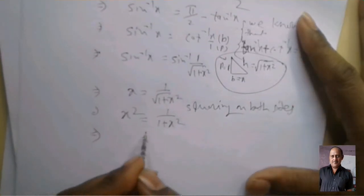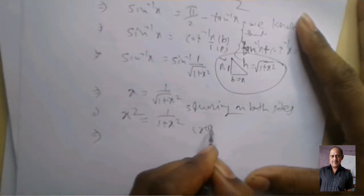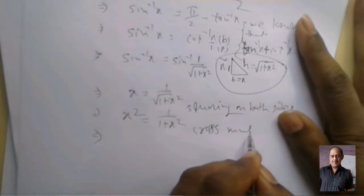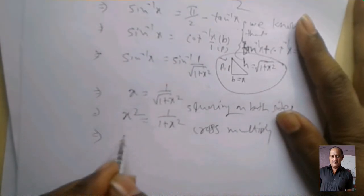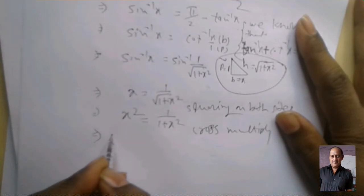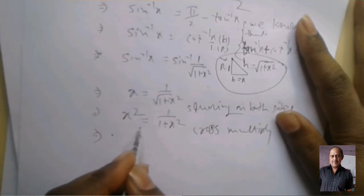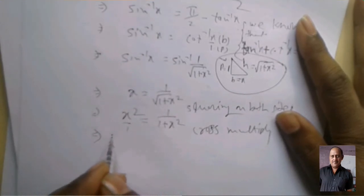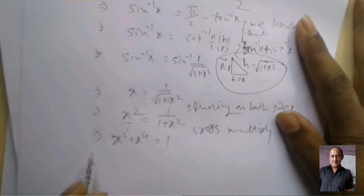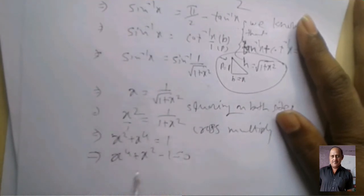Cross multiply: x² plus x⁴ equal 1, so x⁴ plus x² minus 1 equal 0.